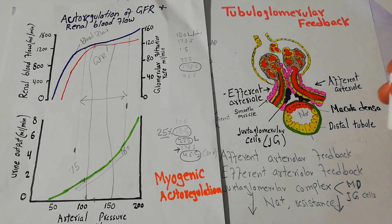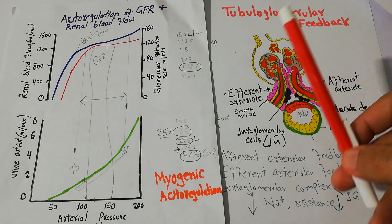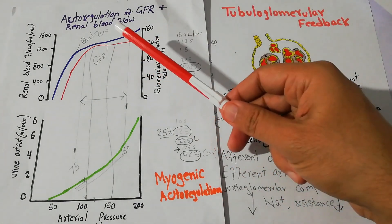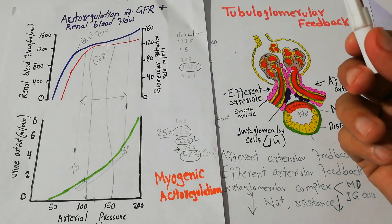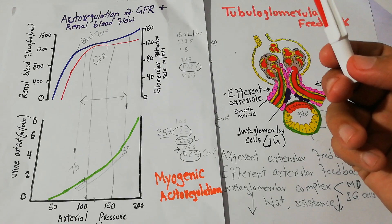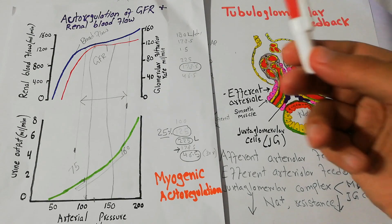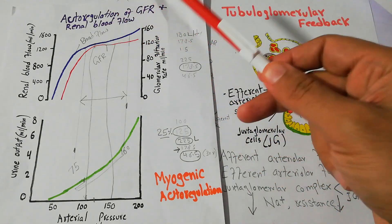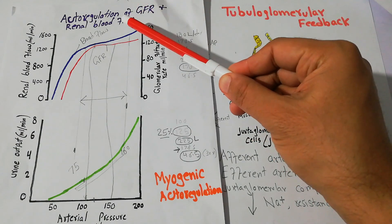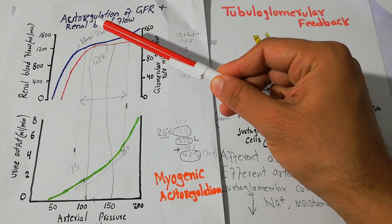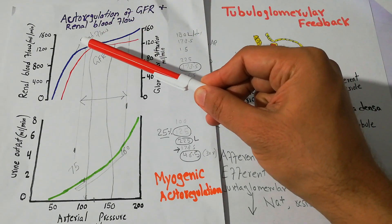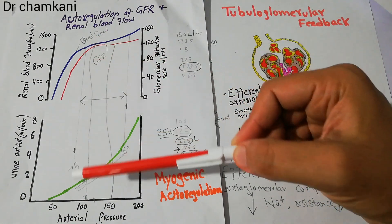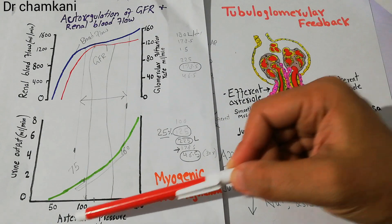Today in this lecture we are going to talk about concepts related to myogenic autoregulation of GFR and renal blood flow. As we have discussed in our last few lectures, autoregulation of GFR and renal blood flow simply means that renal blood flow and GFR remain nearly constant despite changes in arterial pressure.